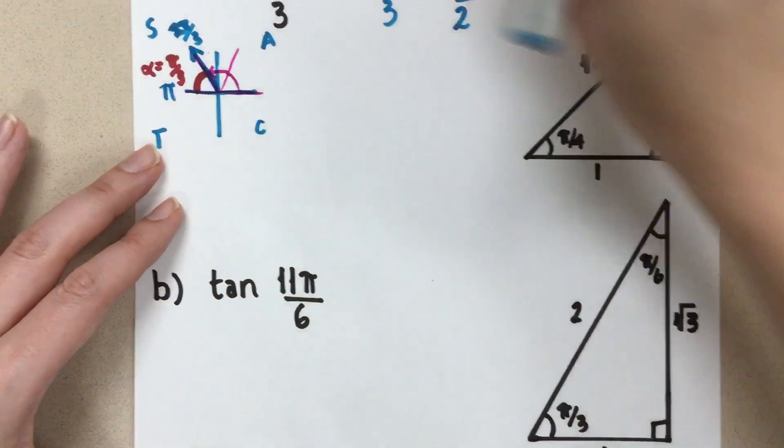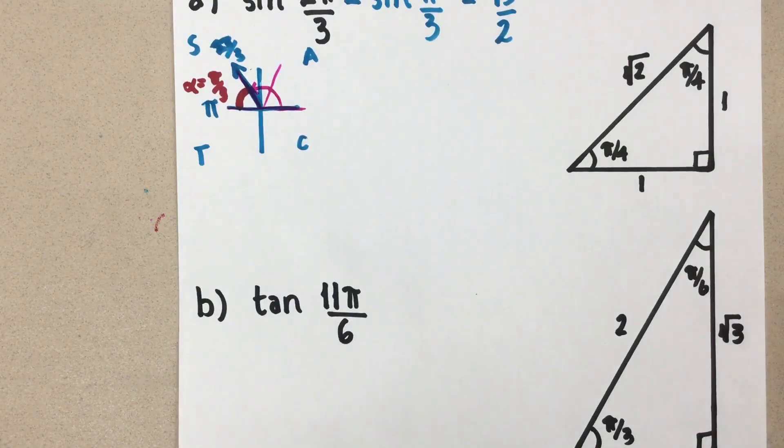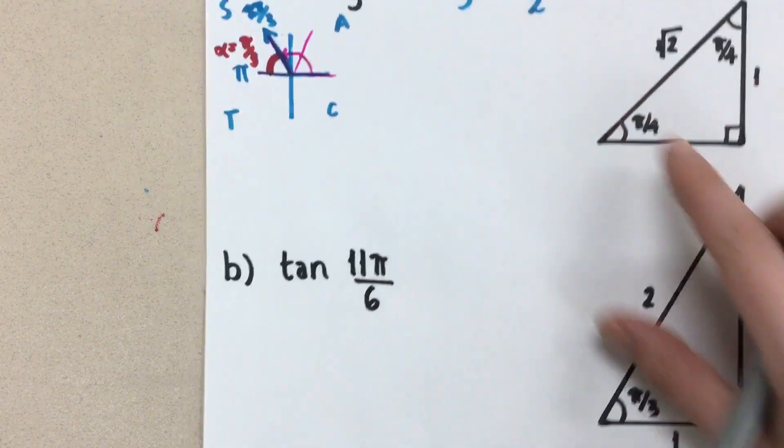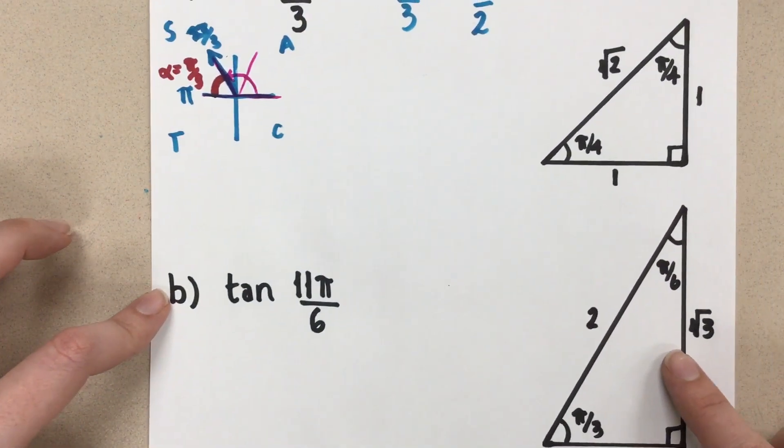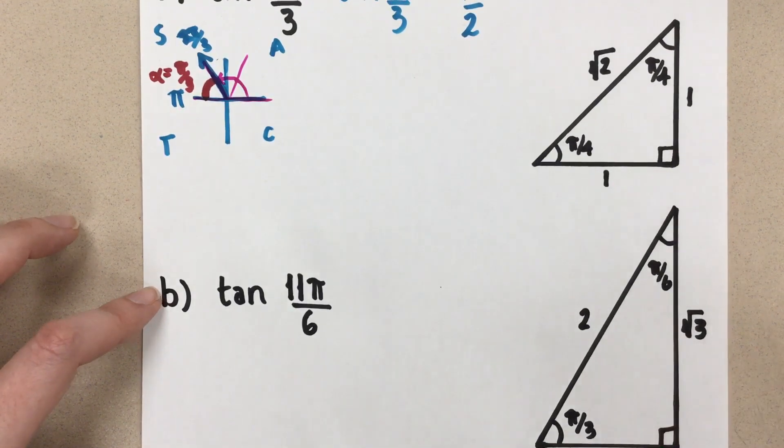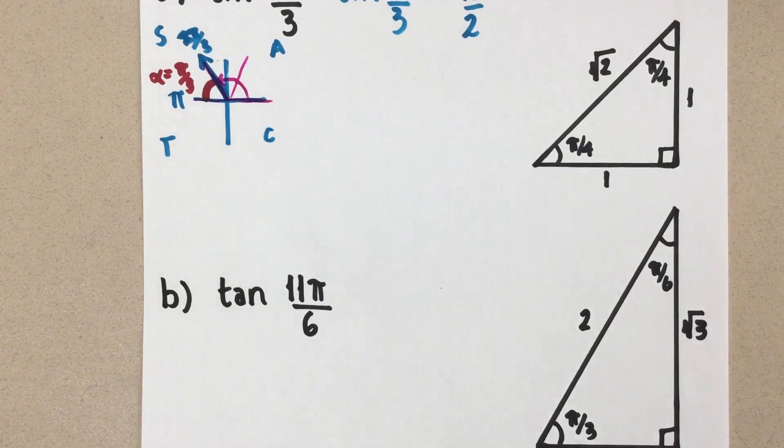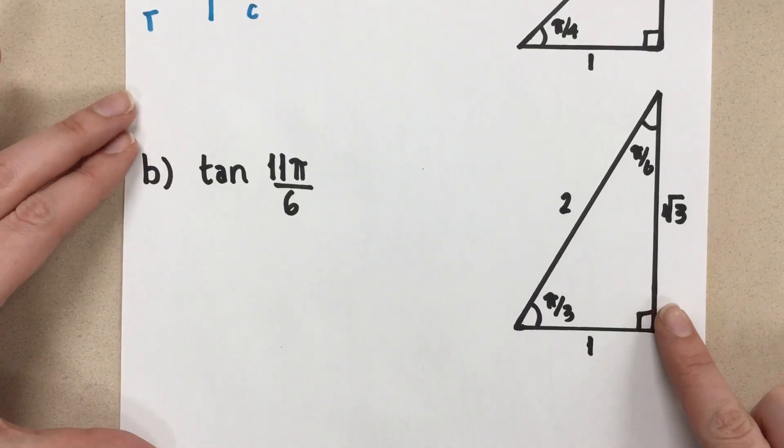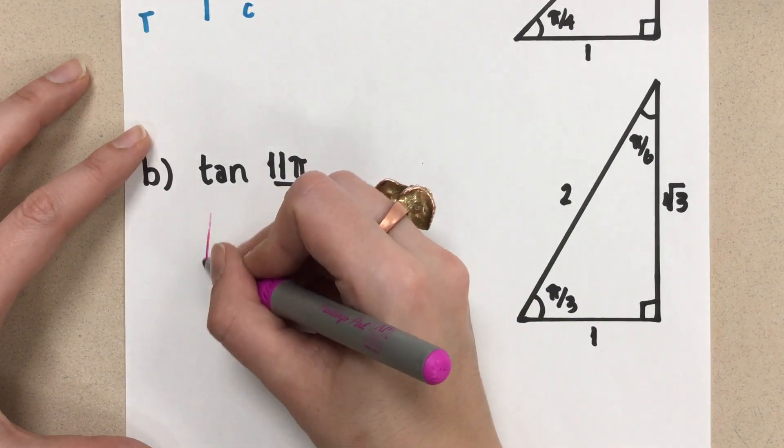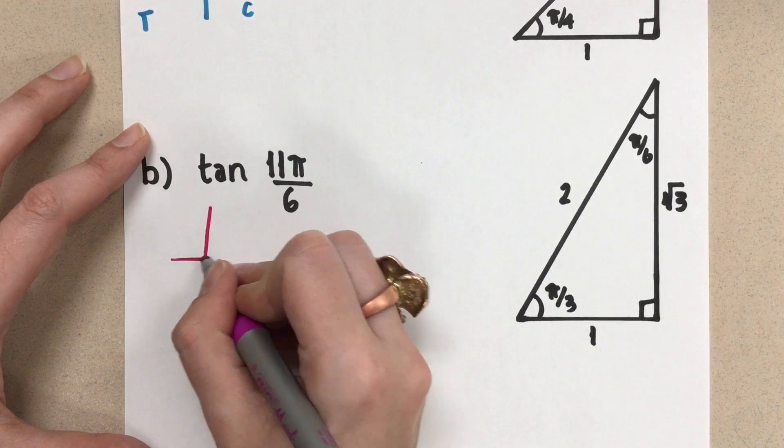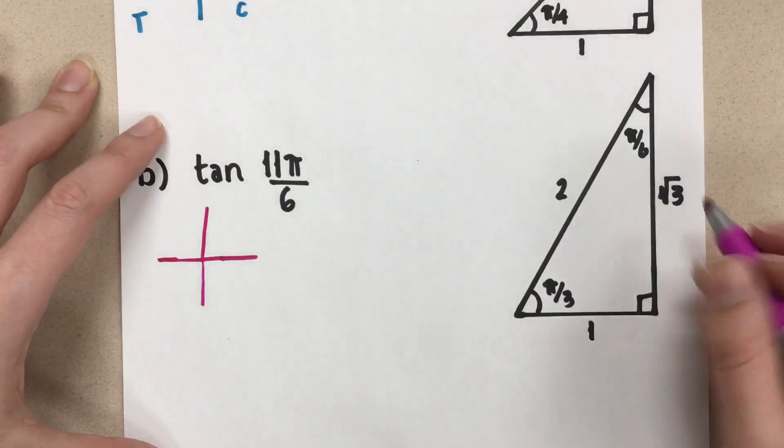Okay, so let's do this again now with the second question. So now we have tangent of 11π over 6. Just like before, we want to take that 11π over 6 angle and put it onto the Cartesian plane so that we can get a visual of where it lands. So I'm going to do my Cartesian plane roughly here.